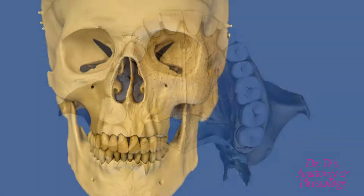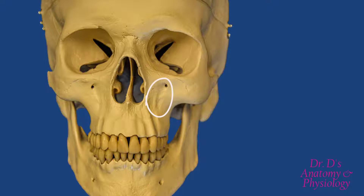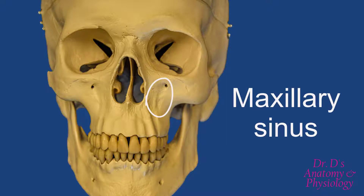Going back to the anterior view of the skull, we should note another feature that you can't really see in an intact skull. Within the body of the maxillary bone there is an air-filled opening which is referred to as a sinus. This is the largest air-filled sinus in the body and it's referred to as the maxillary sinus. It is one of the paranasal sinuses. We have sinuses also in the frontal bone, the sphenoid, and the ethmoid, but the sinuses in the maxillary bones are the largest.